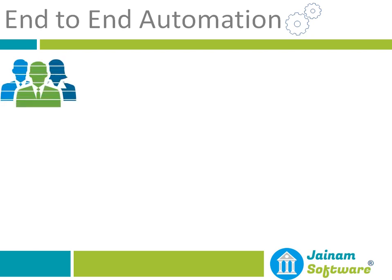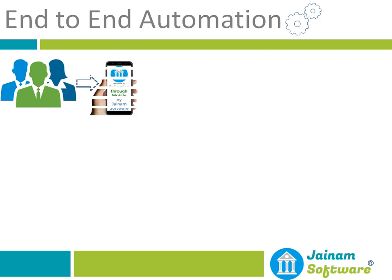The customer journey starts from the need of a loan. The customer will search for different options and come to know about your mobile app, which is provided by Genom Software, or your website, where the customer can do self-registration by providing their email or mobile number. The mobile is verified and then the customer submits their personal information.